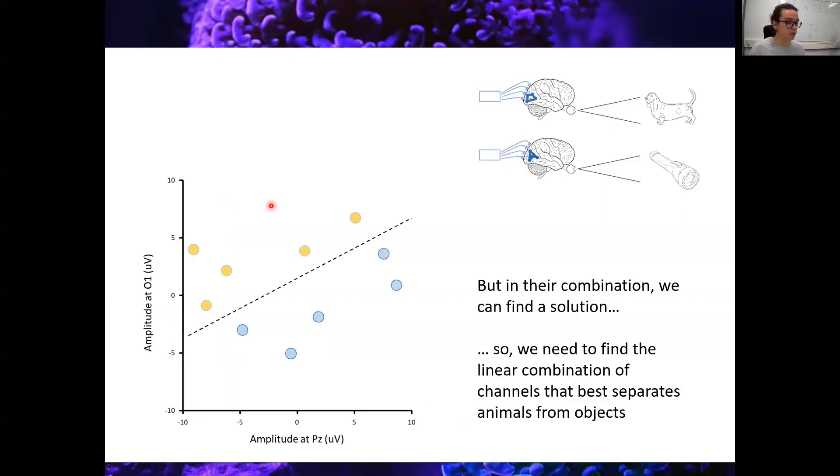But if we took a multivariate solution, if we looked at both channels together and then draw a hyperplane, this dotted line we've got here, we're going to get a perfect separation between the animals and the objects. And this is exactly what we want to do. But how do we find such a boundary? How do we find the best way to separate out these two categories? Well, this is exactly what I'm going to be going on and further into in this video.